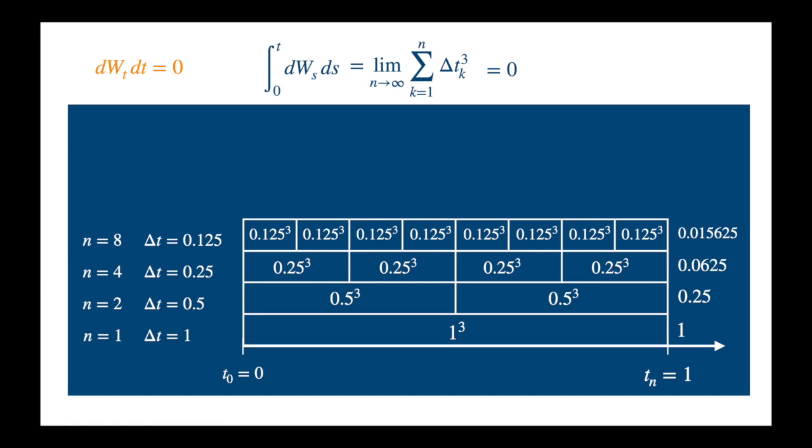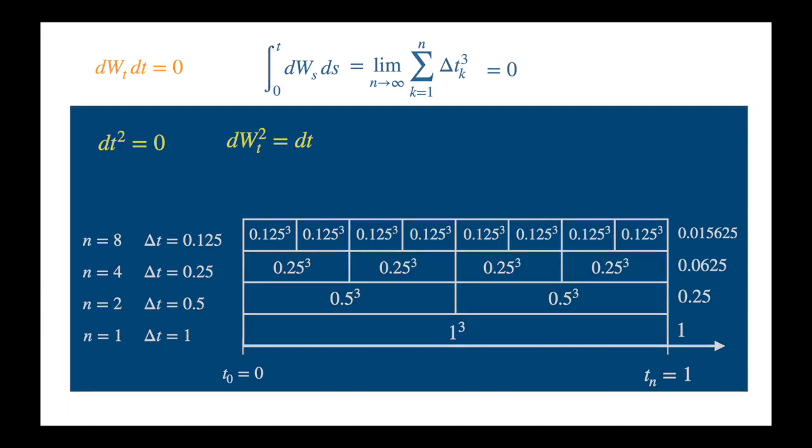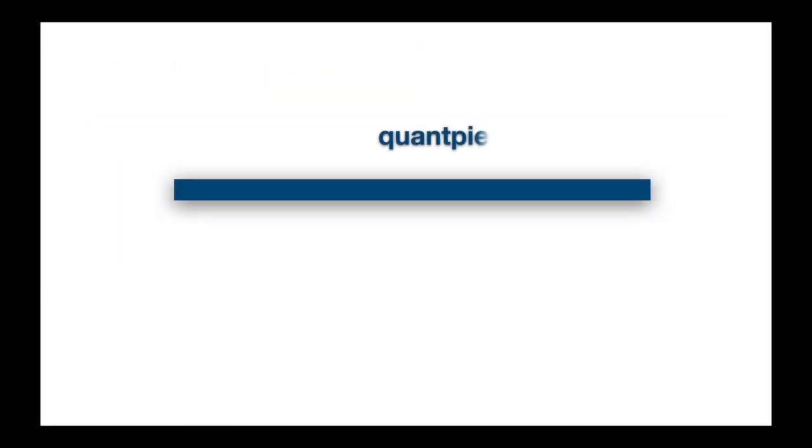Now you can go and apply the same logic to dt squared, which should be slightly simpler, and dW squared, which is slightly complicated. Please give a thumbs up if you would like us to continue the series, and I look forward to seeing you in the next.